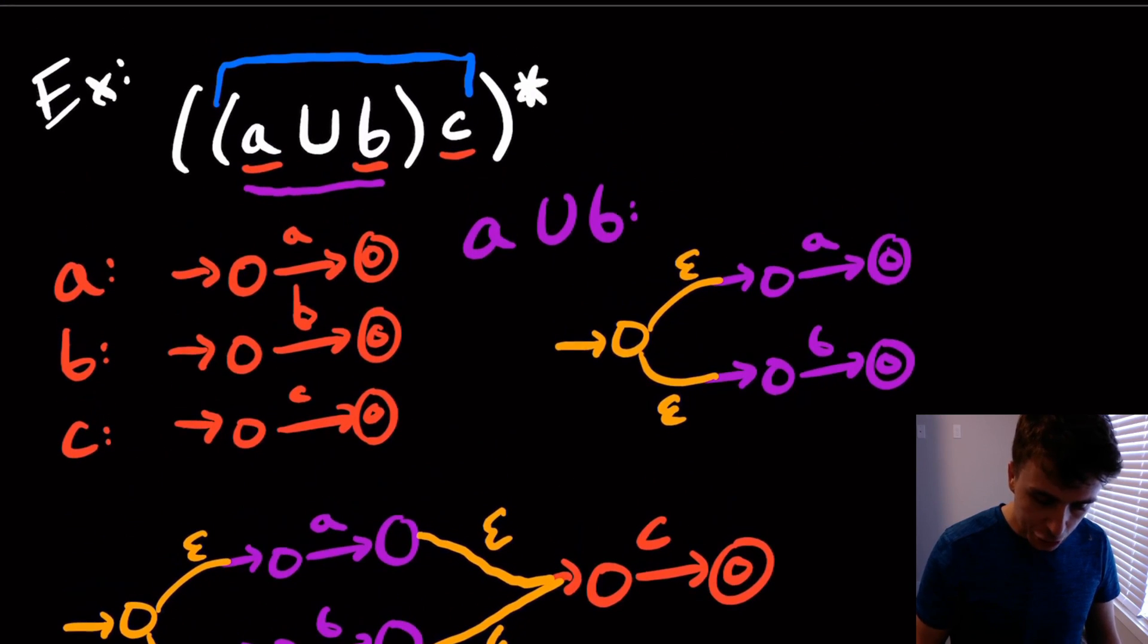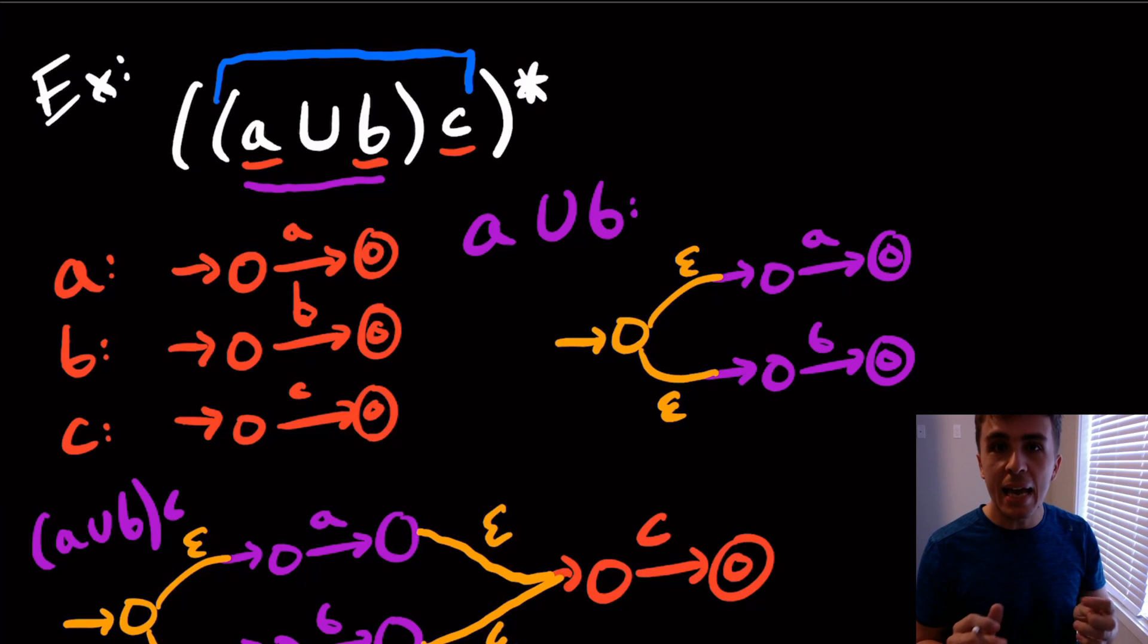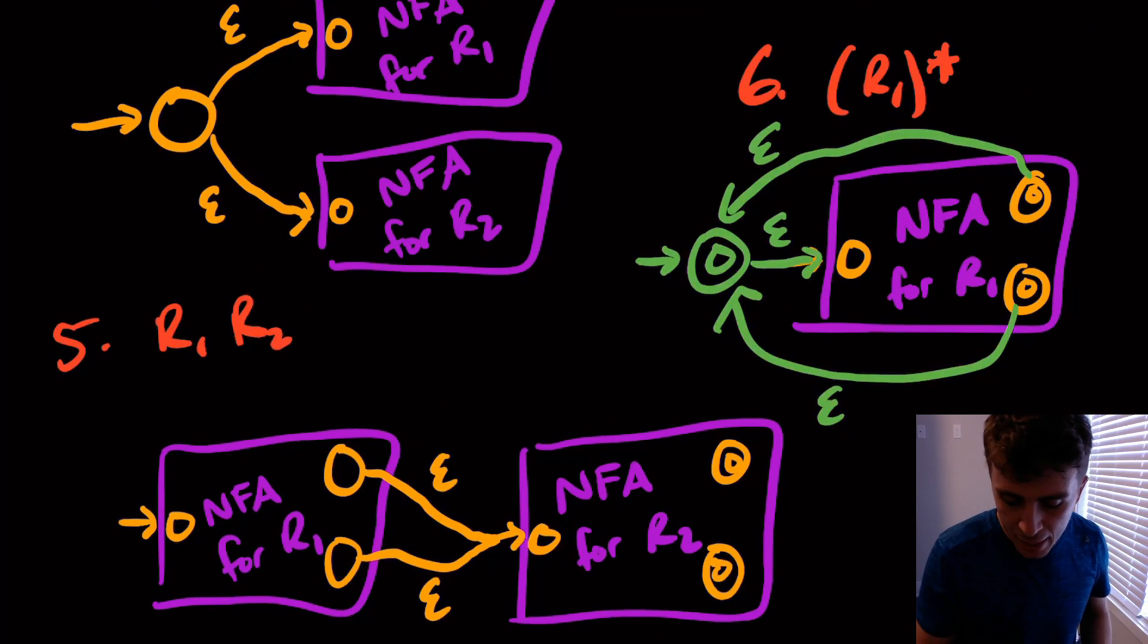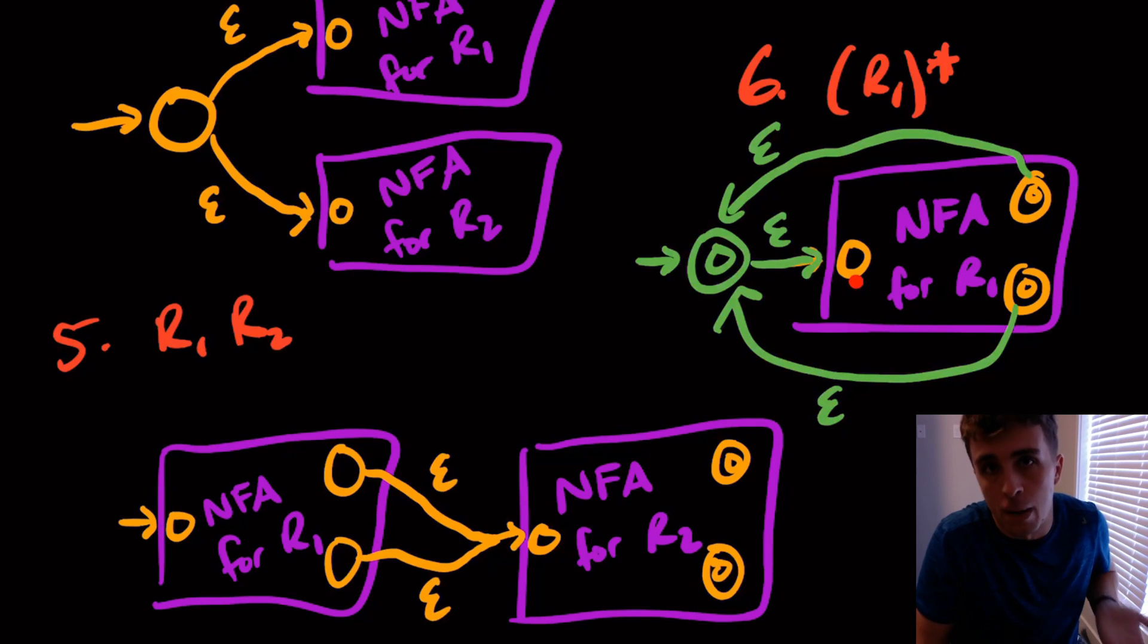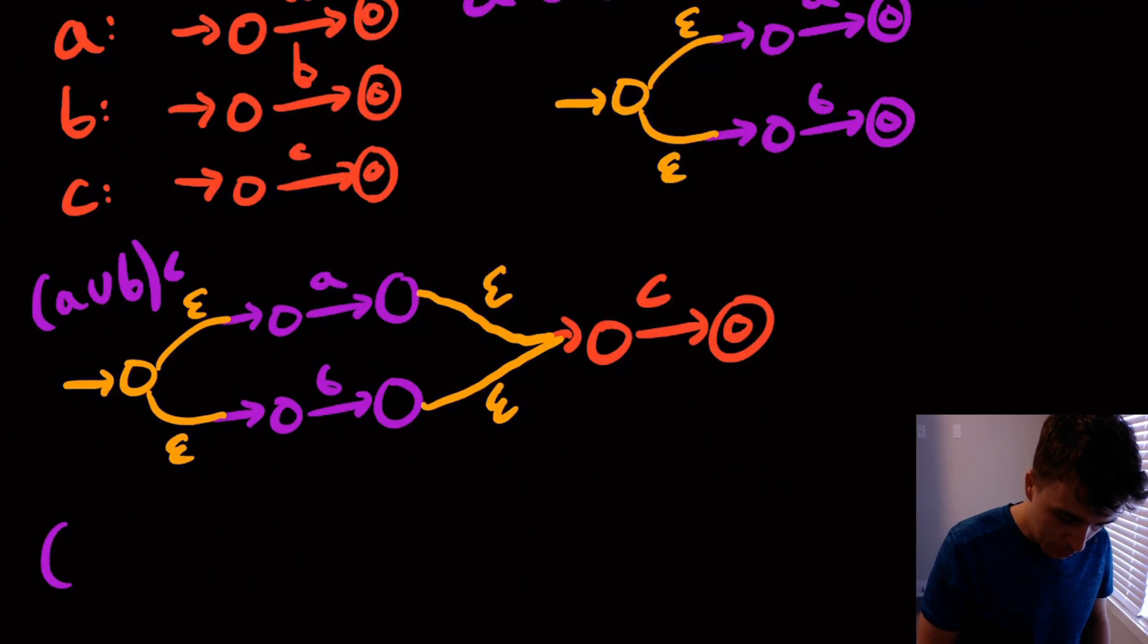So then the only thing left is to do the, maybe I should label this. So this is a union b concatenated with c. So then now let's handle the star. Again, the stuff on the inside of the parentheses, I'm going to treat as a black box. I'm only focused on the star. So remember how star worked. We make a brand new start state that is a final state. This start state in here may or may not be final. I'm not changing whatever it is. And then we have epsilon transitions coming out to this state. So here, I'm going to have a union b concatenated with c, whole thing starred.